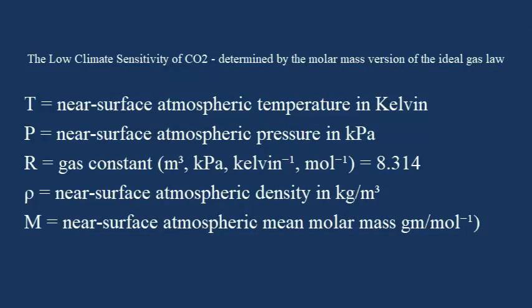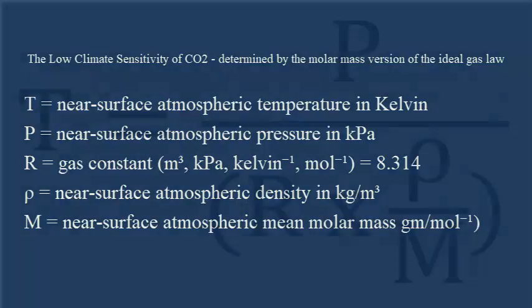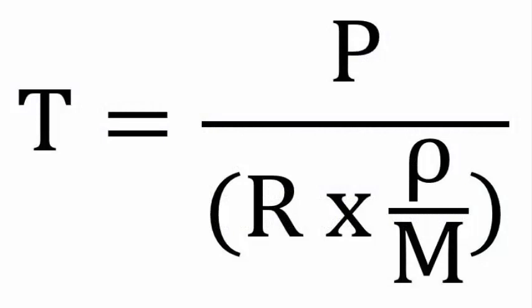You might have seen my last couple of videos on the ideal gas law, the molar mass version of it. It's a simple formula that involves the near-surface atmospheric temperature T in Kelvin, the pressure P in kPa, the gas constant R which is 8.314, rho the near-surface atmospheric density in kg/m³, and M the near-surface atmospheric mean molar mass in grams per mole. This is the formula we're going to use.